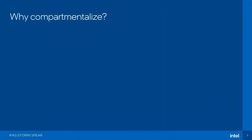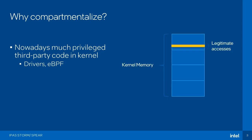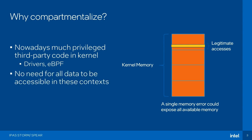As you might have guessed from the title of this talk, it's all about compartmentalization. So why do you need compartmentalization in the Linux kernel? The first observation is that nowadays there's a lot of third-party code that runs in ring zero that's not necessarily upstream in the main kernel tree. Think of things like drivers or eBPF packet filters — all running in ring zero. Suppose there's some kind of bug in any of these programs running in ring zero, say a memory error — an attacker could potentially disclose all the memory available on the machine just from a single bug, which is not really ideal.